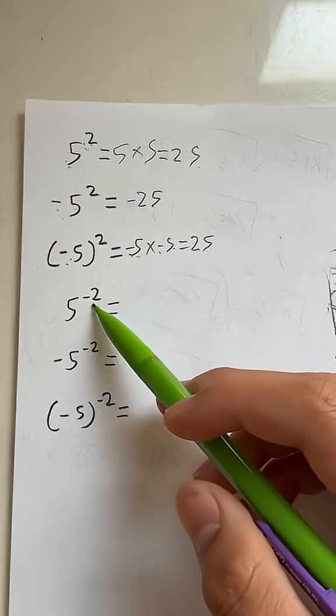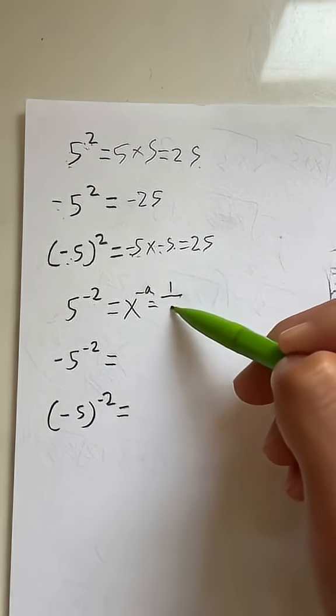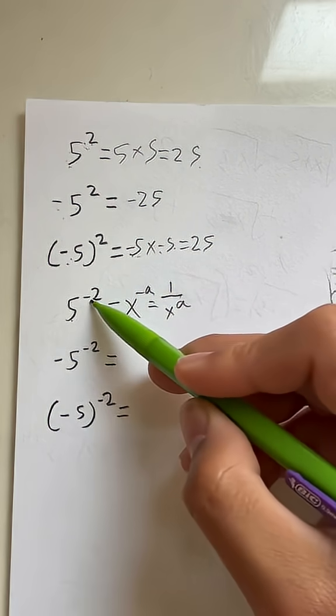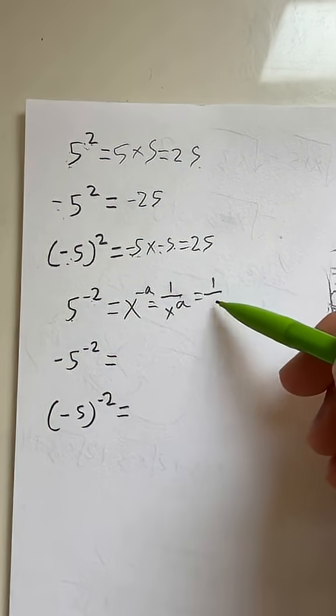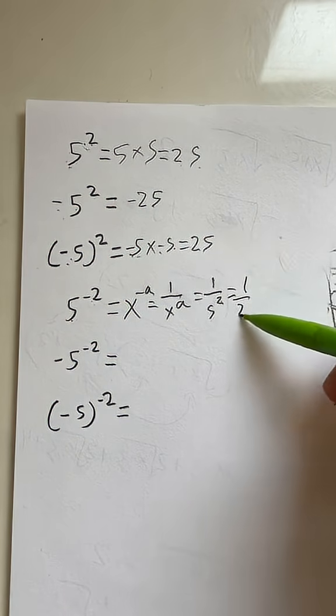Now, what if it's 5 raised to the negative second? We have to remember that when it's x raised to the negative a, this is just equal to 1 over x to the a. So 5 to the negative second is the same as 1 over 5 to the second, which we can rewrite because 5 to the second we know is 25, so it's 1 over 25.